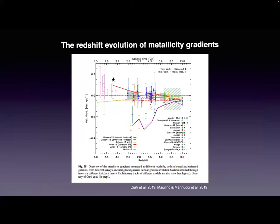Looking at metallicity gradients as a function of redshift, our observations show that from redshift 0 to redshift 4, the metallicity gradients evolve: they seem to become more positive or inverted as we go to higher redshift. Galaxy formation models can reproduce this trend if a strong supernova feedback is included. All the lines represent the models and the symbols represent observations. You have to use very strong supernova feedback to actually get positive or inverted metallicity gradients at higher redshift.